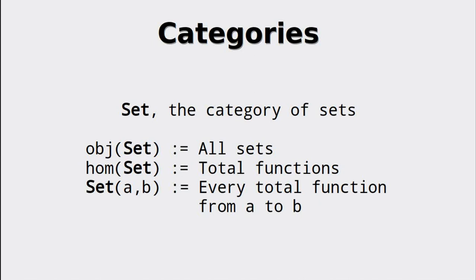A category that will appear later is Set, the category of sets. The objects are all possible sets and the morphisms are given by every total function on every set. Of course, this category is rather large since it is infinite, and is also pretty hard to visualize effectively. But this category will be very important later, so keep it in mind.